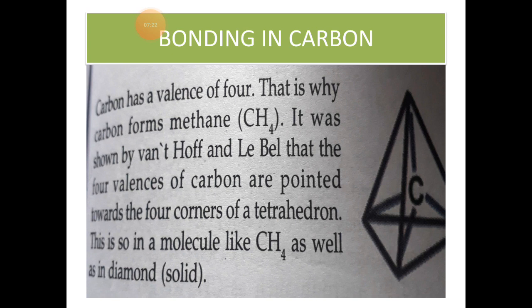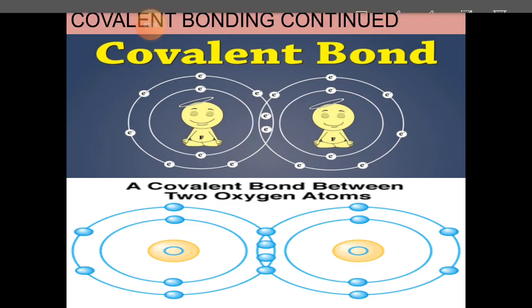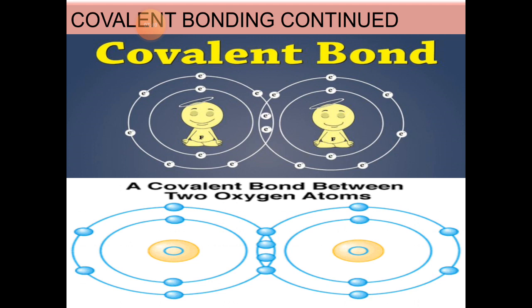It was shown by Van't Hoff and Lebel that the four valences of carbon are pointed towards four corners of a tetrahedron. This is so in a molecule like methane as well as in diamond. Now, let's come to the covalent bond. As we know that noble gases have complete outer electron shells which makes them stable. In order to be stable, atoms come together and form a bond to achieve the noble gas configuration. This coming together and sharing of electron pairs. Hydrogen comes, an atom of hydrogen comes in contact with an atom of hydrogen. It results in the formation of a chemical bond that we call as covalent bond.